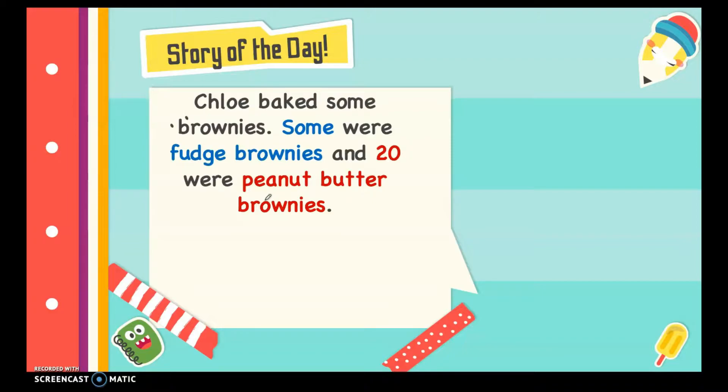In that case, we can write it as y plus 20. 20 for the peanut butter brownies, and we represent y for some fudge brownies since the number of fudge brownies is still unknown. Now, let's continue.